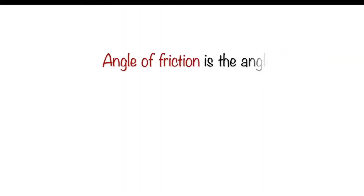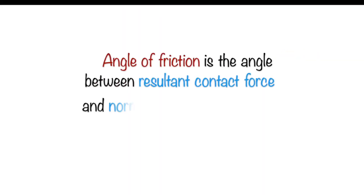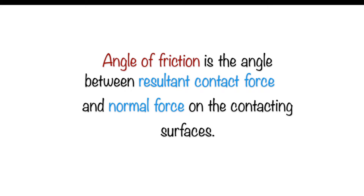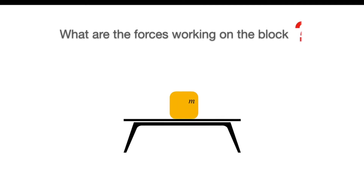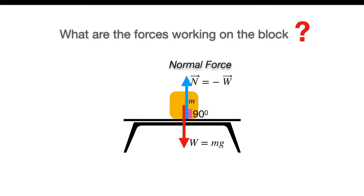What is the angle of friction? The angle of friction is the angle between the resultant contact force and the normal force on the contacting surfaces. Contact forces are generated when two surfaces come in contact. Consider a block of mass m resting on a table. The forces acting on it are gravity pulling downward and a reaction force by the table — the normal force — acting upward. This normal force is a contact force.